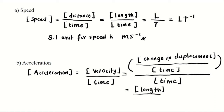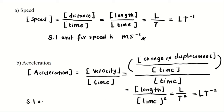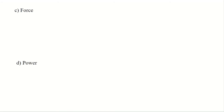So that is for velocity, and then we divide it by time. The final result will be length over time squared — that is big L over big T squared. The SI unit from the dimension we get is meter per second squared.